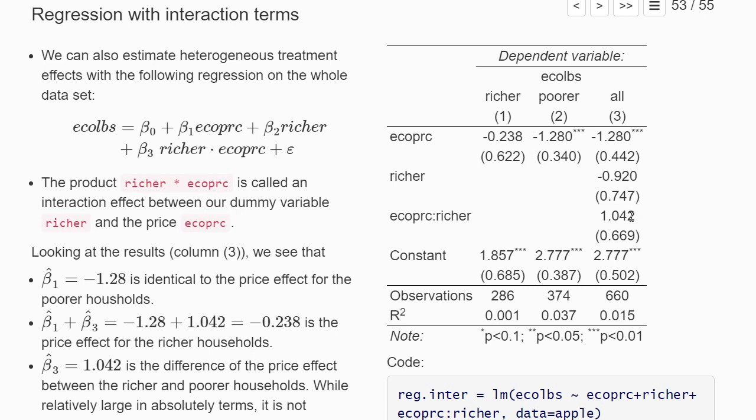Now, the nice thing in the third regression is that we for this difference here, we also have a standard error. So we see that the standard error of beta three of the coefficient before the interaction term is 0.669. And this means basically the 95% confidence interval also contains negative numbers. So this interaction term is not significant. So even though we see that richer households react less to prices than poorer households, we don't find a significant difference between richer and poorer households looking at this regression with the interaction term.